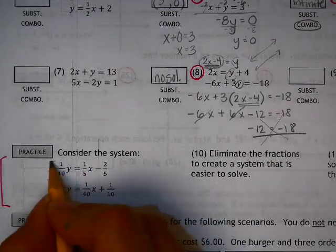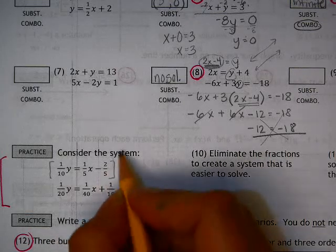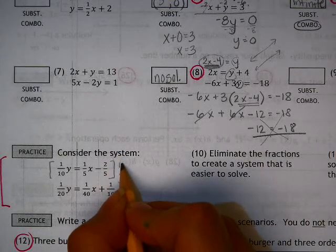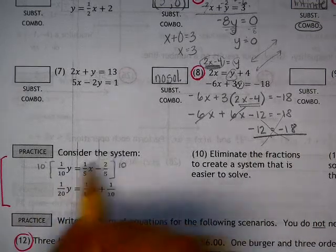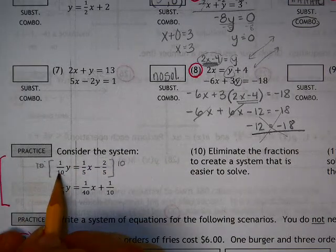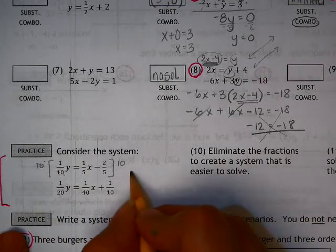If you look at here, if I multiply both sides of these equations by the least common denominator, which is 10, I multiply every single thing by 10. What happens is these cancel, 10 divided by 10. That goes away, leaving me with a y.